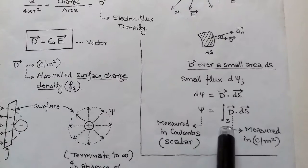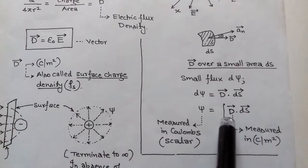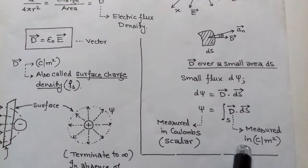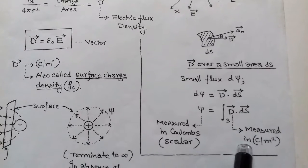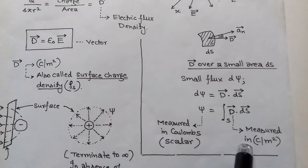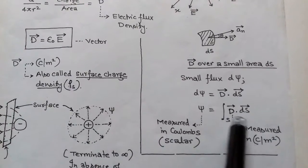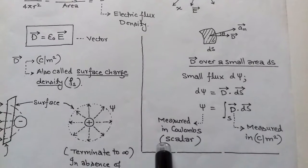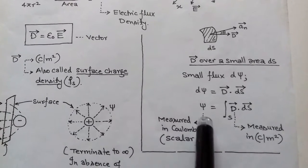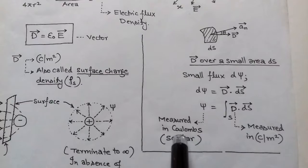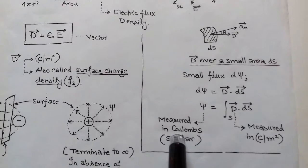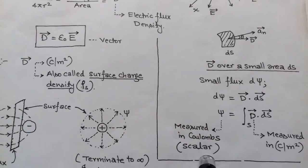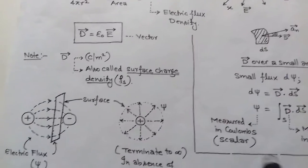Total flux ψ equals the surface integration of D·dS. Here D is electric flux density measured in coulombs per meter square. The dot product of two vectors is a scalar quantity, so flux is measured in coulombs — same as charge — and it is a scalar quantity.